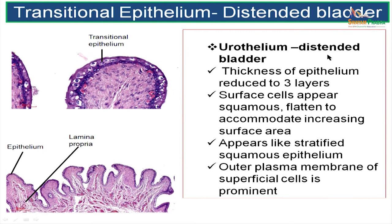What about the transitional epithelium in a distended bladder? When the bladder gets distended with urine, the thickness of the epithelium is reduced to 3 layers. The surface cells become flattened or squamous, to accommodate the increasing surface area. Transitional epithelium in a distended bladder will look like stratified squamous epithelium.